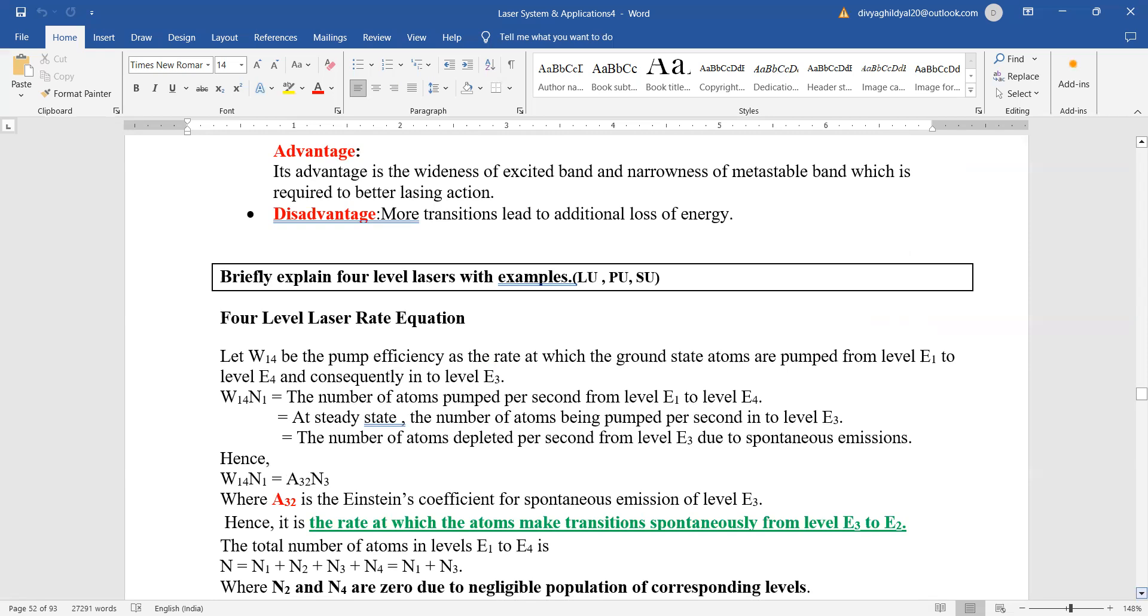Obviously, the higher the number of transitions, they lead to additional loss of energy—only one disadvantage. This is also a very famous question: explain four-level lasers with examples. For four-level lasers, you can write first the number of atoms from E1 to E4.